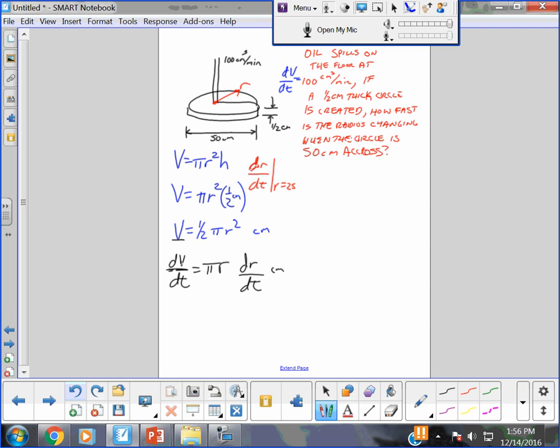And the only other variable in that problem is dr/dt. So I can write 100 centimeters cubed over minutes equals pi 25 centimeters dr/dt.